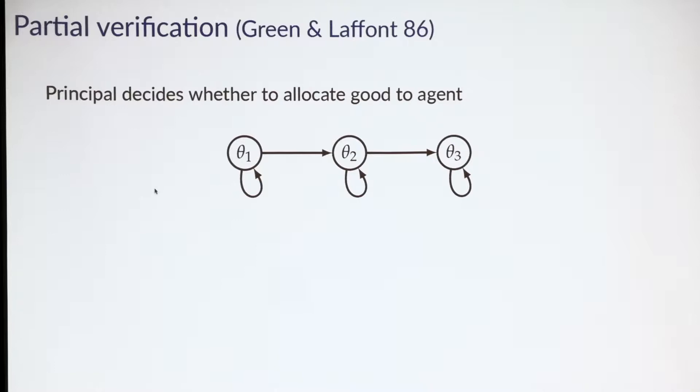The agent, regardless of type, likes the good. There are no transfers. Let's suppose the principal would like to allocate the good if and only if the agent is type 2 or type 3. A natural approach would be to give the agent the good if he reports type 2 or type 3.